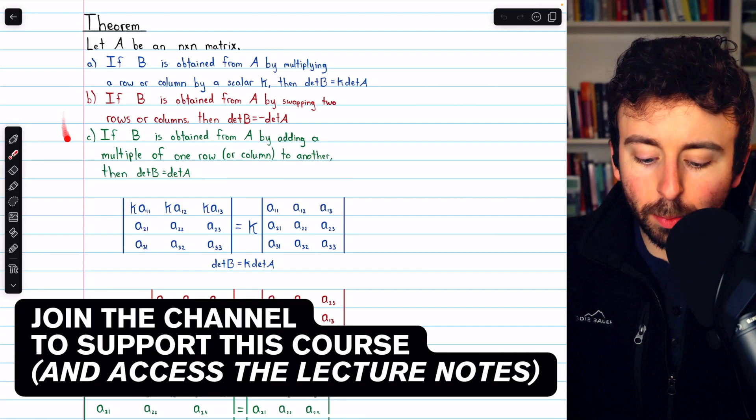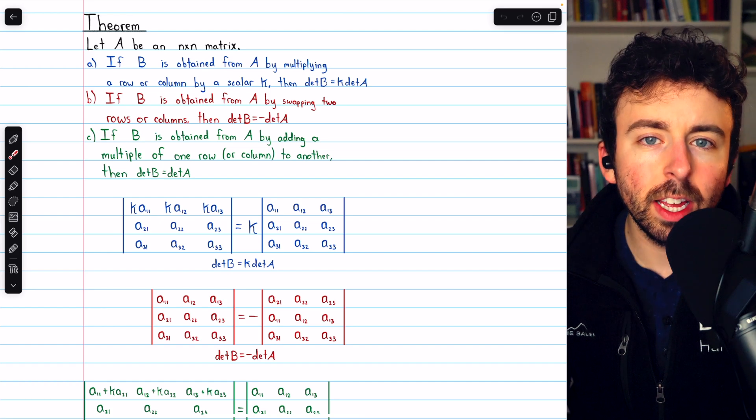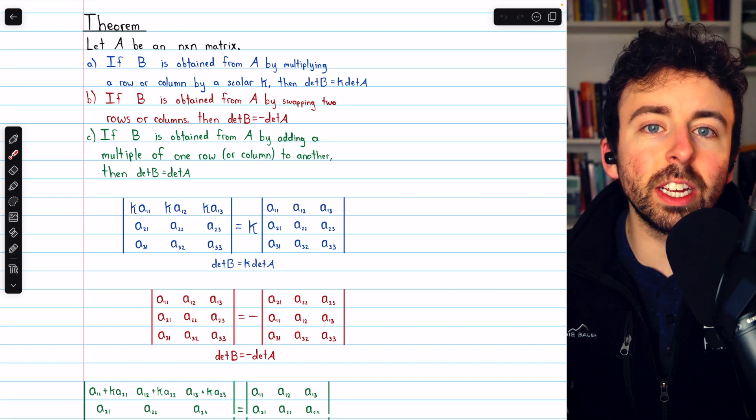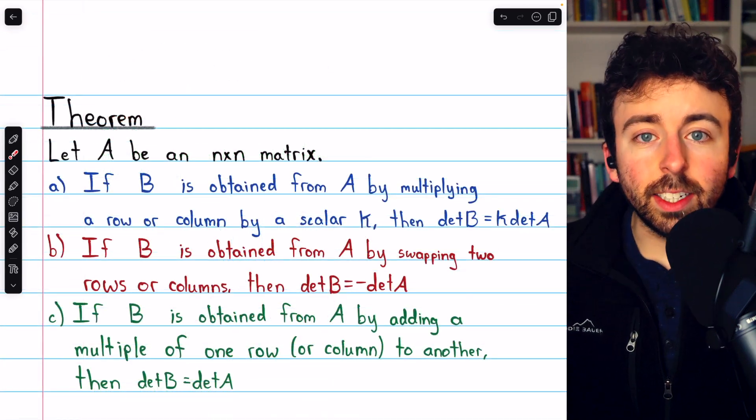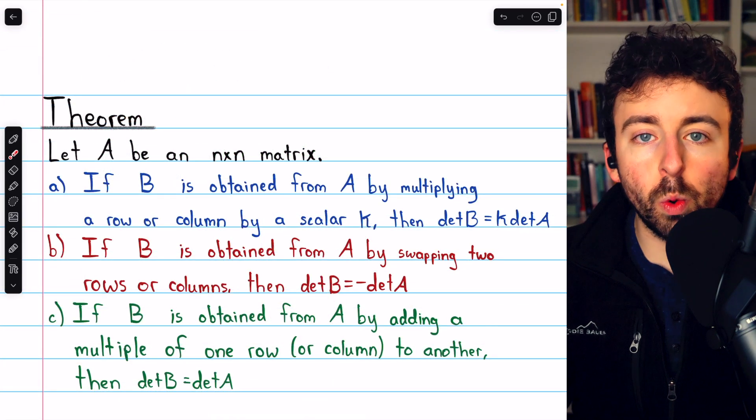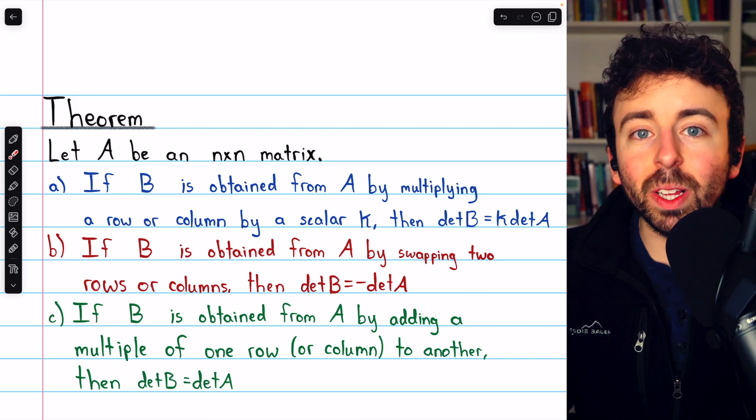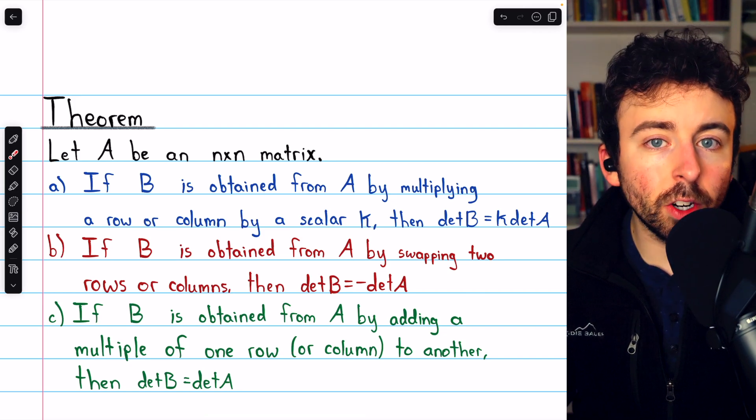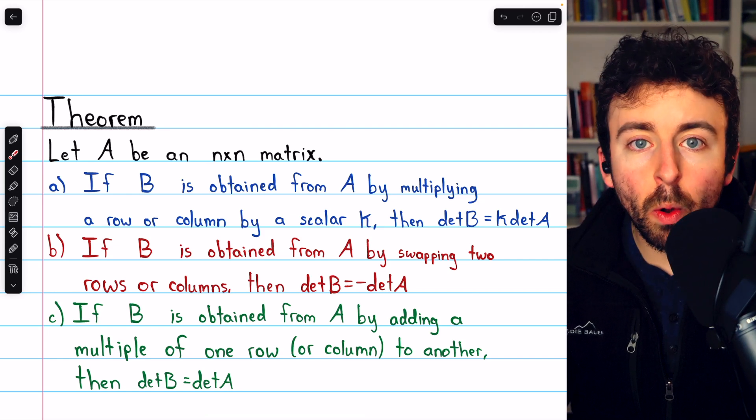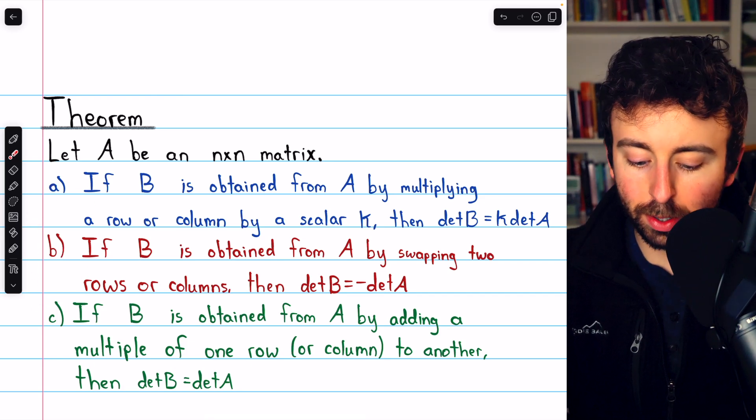We previously discussed how elementary row operations affect the determinant of a matrix. With this knowledge, we're now able to find determinants using row reduction. The idea is that to find the determinant of a matrix, we will reduce it to a matrix whose determinant is quite easy to calculate, and then relate that determinant to the determinant of the original matrix. We just have to keep in mind how our row operations will affect the determinant, and these are the things we must remember.